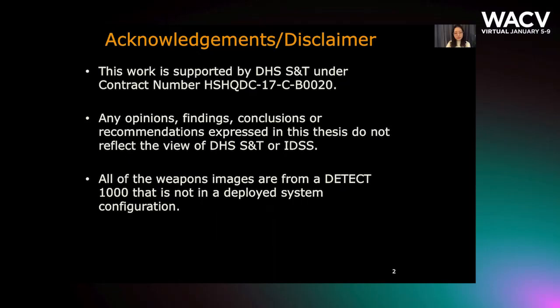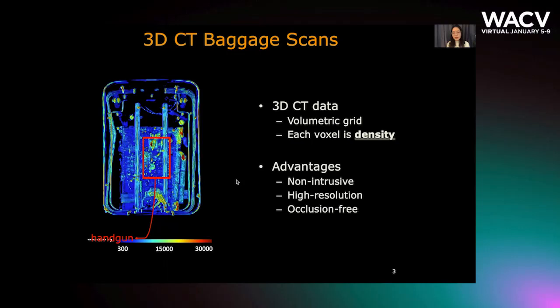With the recent advances in technology, CT scanners have become much faster and reconstruction accuracy has been improved. As a result, people are able to introduce CT scanners from medical imagery to airport security checks. Let's first have a look at CT baggage scans.